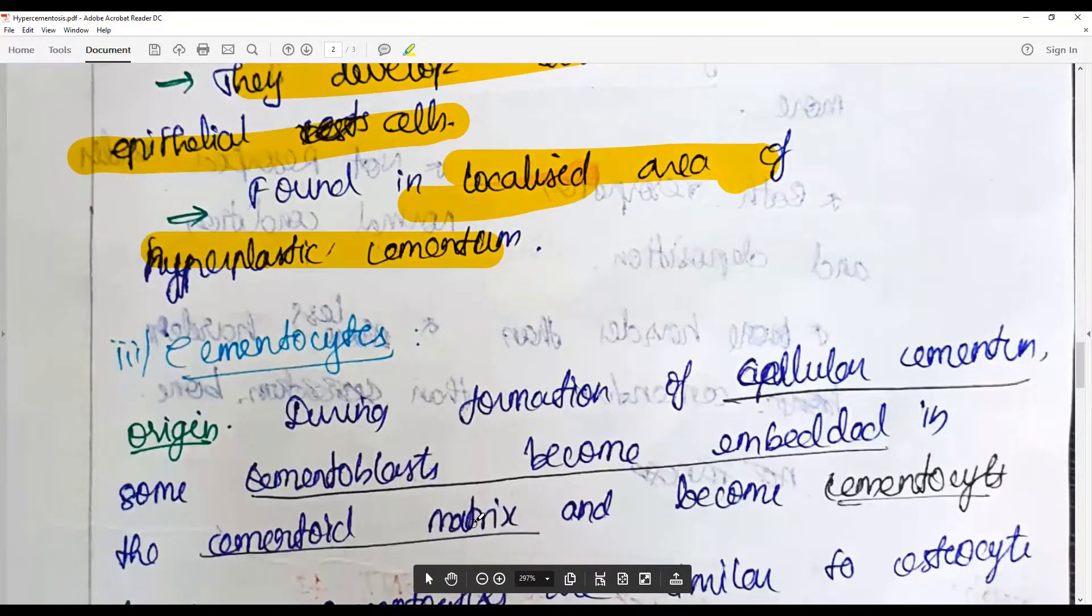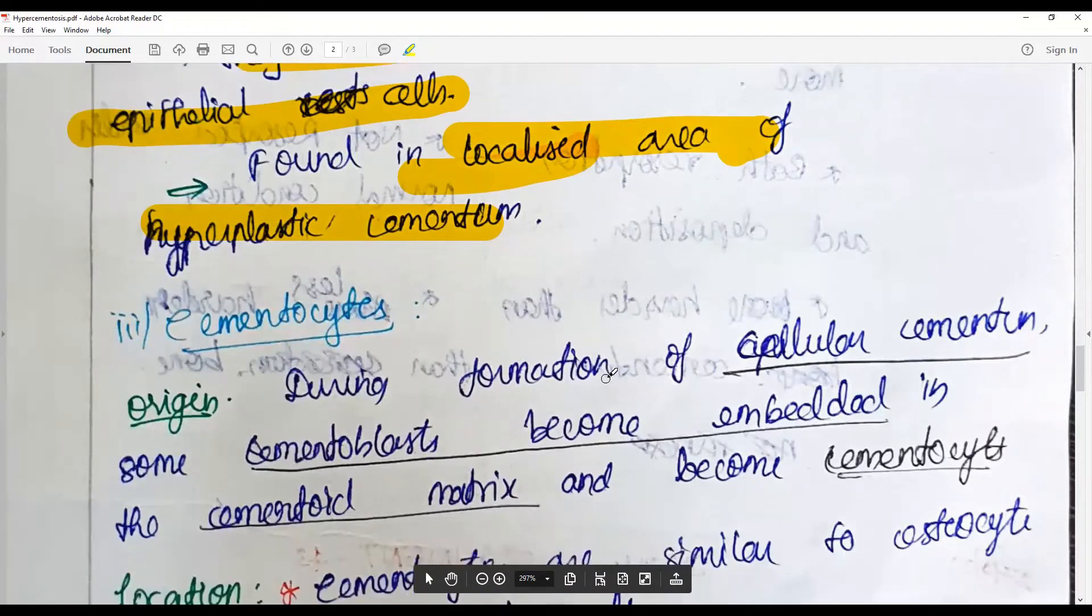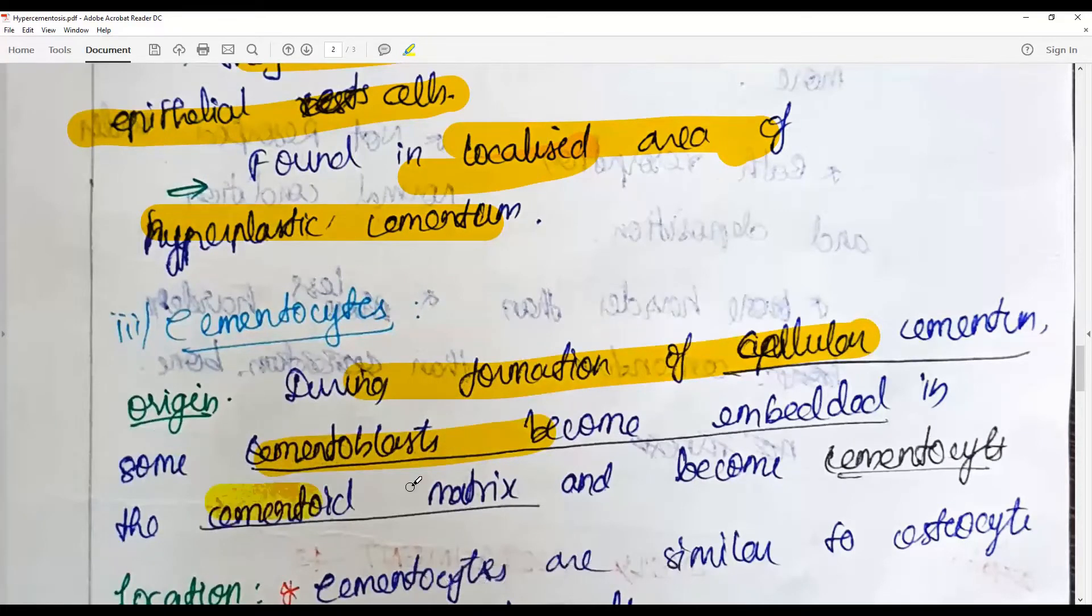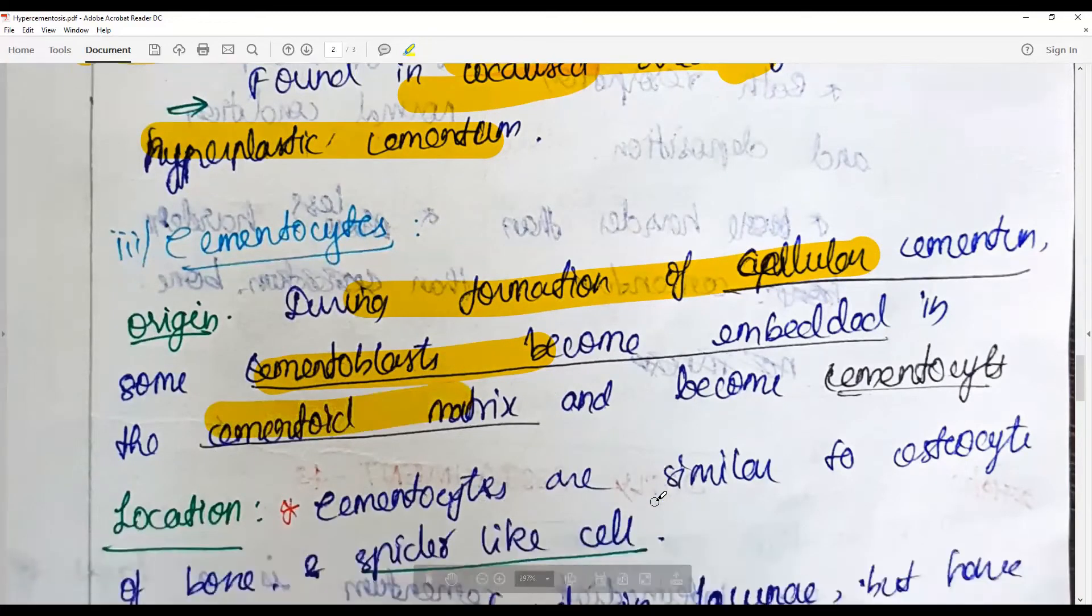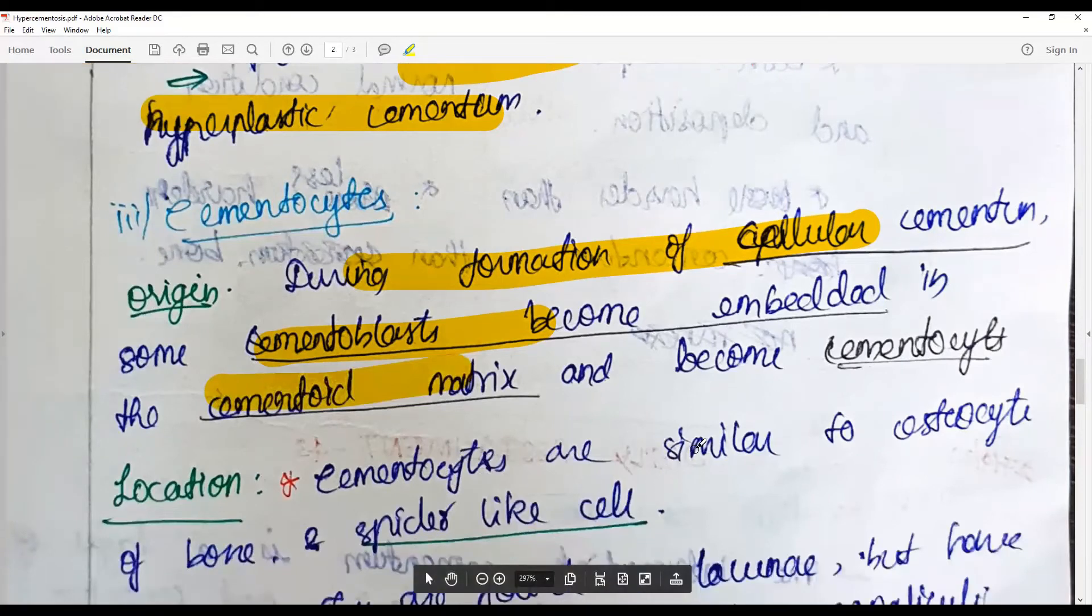The cementocytes are the cells that are responsible for formation of cementum. During cellular cementum formation, some cementoblasts become trapped or embedded in the cementoid matrix and become the cementocytes or the resting cells.